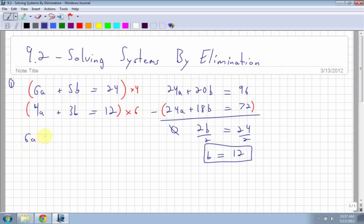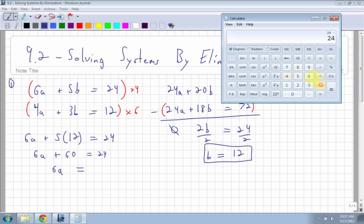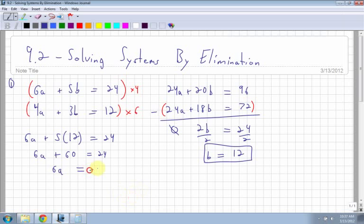So I plug it in. 6a plus 5. Remember, I'm substituting the value of 12 in for b. So 5 times 12 equals 24. I work this out. I get 6a plus 60 equals 24. Subtract 60. So I get 6a is equal to... And remember, always use a calculator if you're unsure. So I get 24 minus 60 equals negative 36. And then divide by 6. I get a is equal to negative 6.